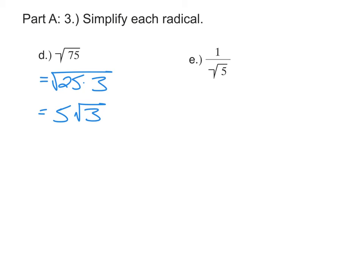Now when it comes to a fraction, you can't have a radical in the denominator. So what we have to do is, since we have square root of 5 in the denominator, I'm going to want to multiply this by another square root of 5.